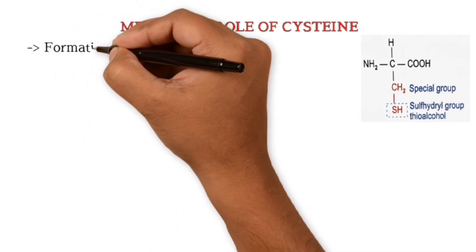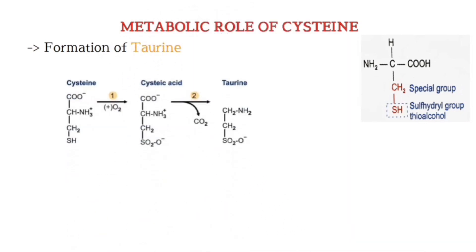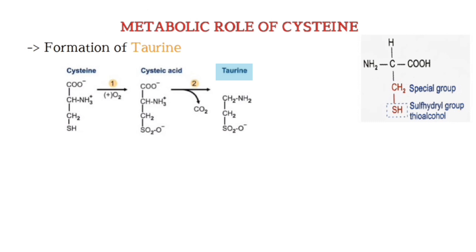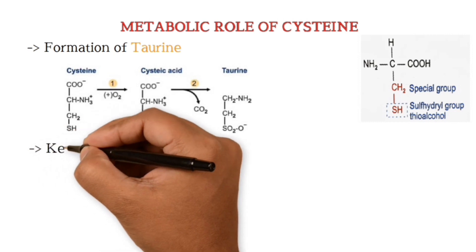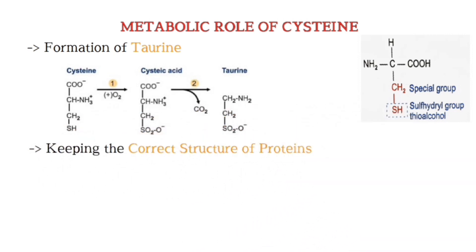The next metabolic role of cysteine includes formation of taurine: cysteine to cysteic acid to taurine. Taurine is used for conjugation of bile salts, has a role in calcium movement, and acts as an inhibitory neurotransmitter in the CNS. Lastly, cysteine helps in keeping the correct structure of various proteins — cysteine residues in a polypeptide chain form disulfide bridges, and proteins of hair and nails have a large amount of cysteine.